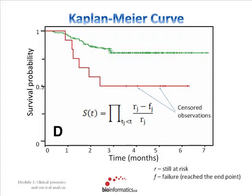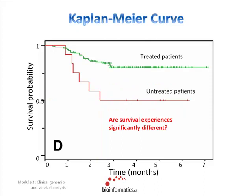You have two curves and you plot the Kaplan-Meier curve and see that they separate. Now the question is: is it really worthwhile to put this drug into the clinic? Is it really effective for these patients? The question is whether these survival experiences are actually statistically significant. We use another test to answer this question. The Kaplan-Meier is more for estimating the probability of how a patient will do over time under given conditions, and for visual examination of different survival experiences of different groups of patients.